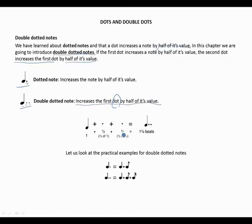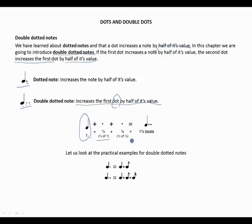The calculation works as follows: a crotchet is equivalent to one beat. The first dot gives us half of that, which is one and a half. The second dot is half of the first dot — half of a half is a quarter — giving us three quarters. Therefore, a double dotted crotchet equals one beat and three quarters.